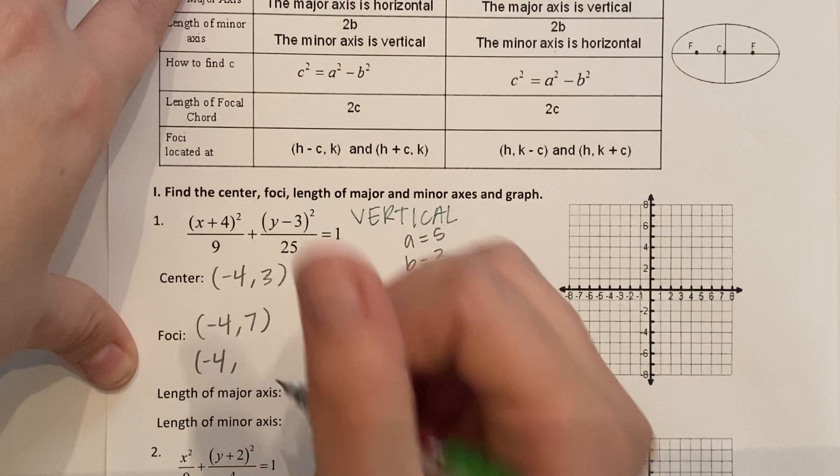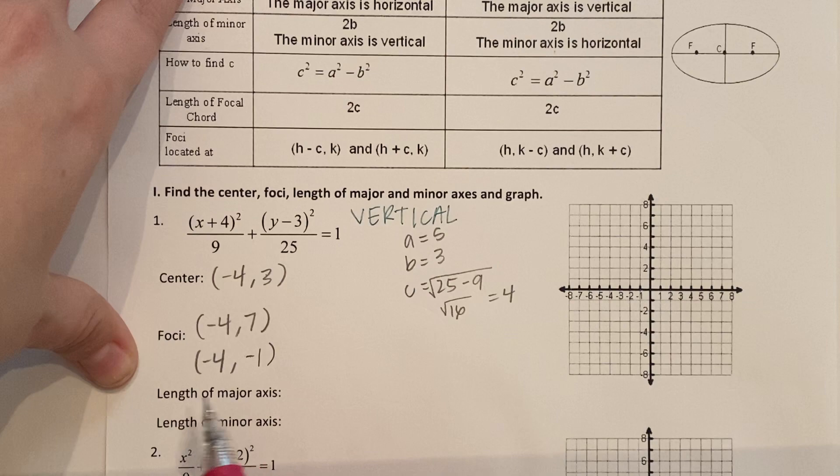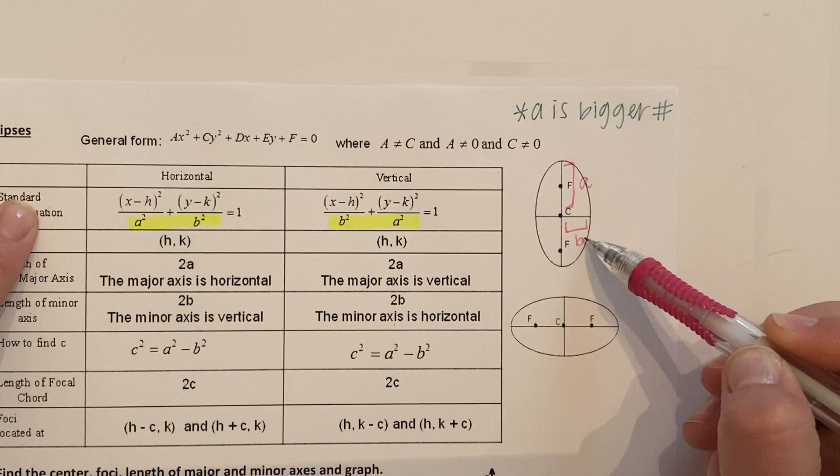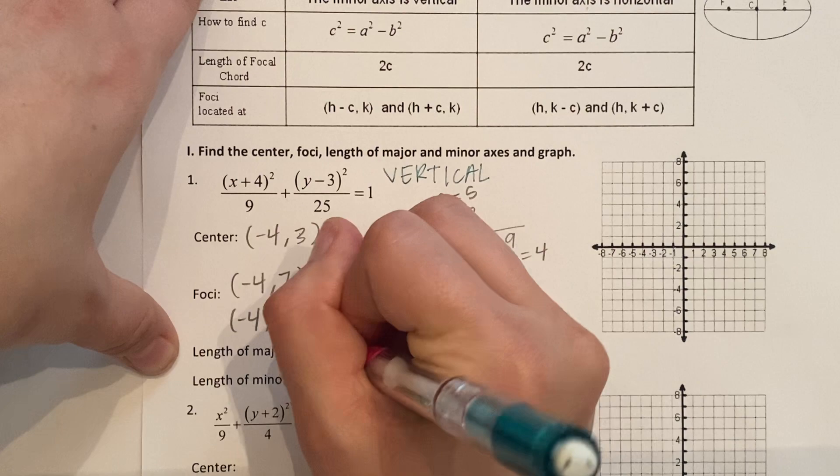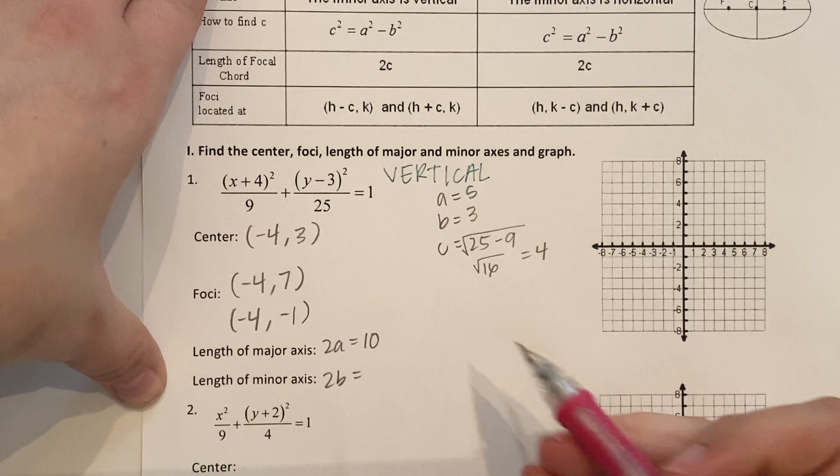Major axis comes from both A's together. Minor axis comes from both B's. So if A is 5, that means the whole line is going to be 10. The minor axis, 2B. So 2 times 3, the whole line is going to be 6. Now that we know all of our information, we can graph.